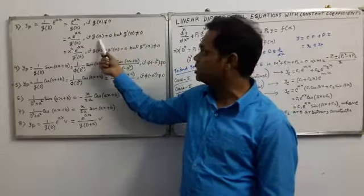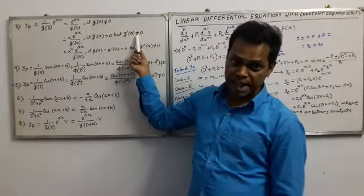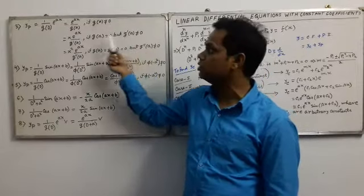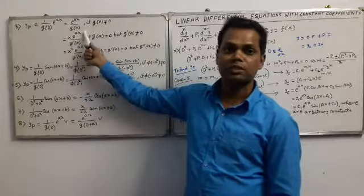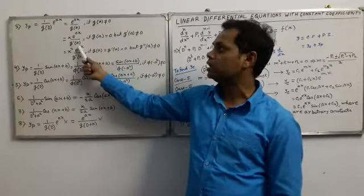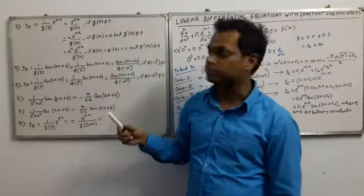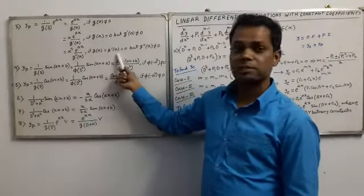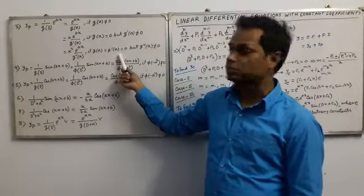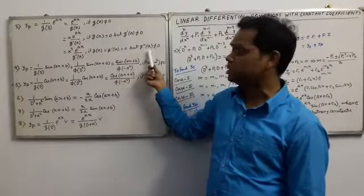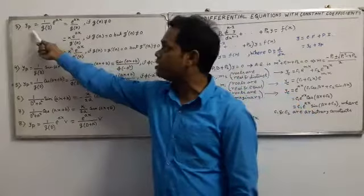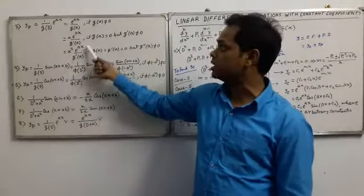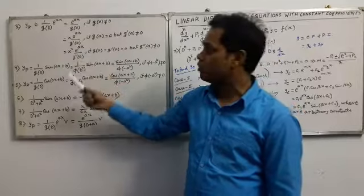If g(a) = 0 but g'(a) ≠ 0, then yp = x*e^(ax) / g'(a). If both g(a) and g'(a) are 0 but g''(a) ≠ 0, then yp = x^2*e^(ax) / g''(a).